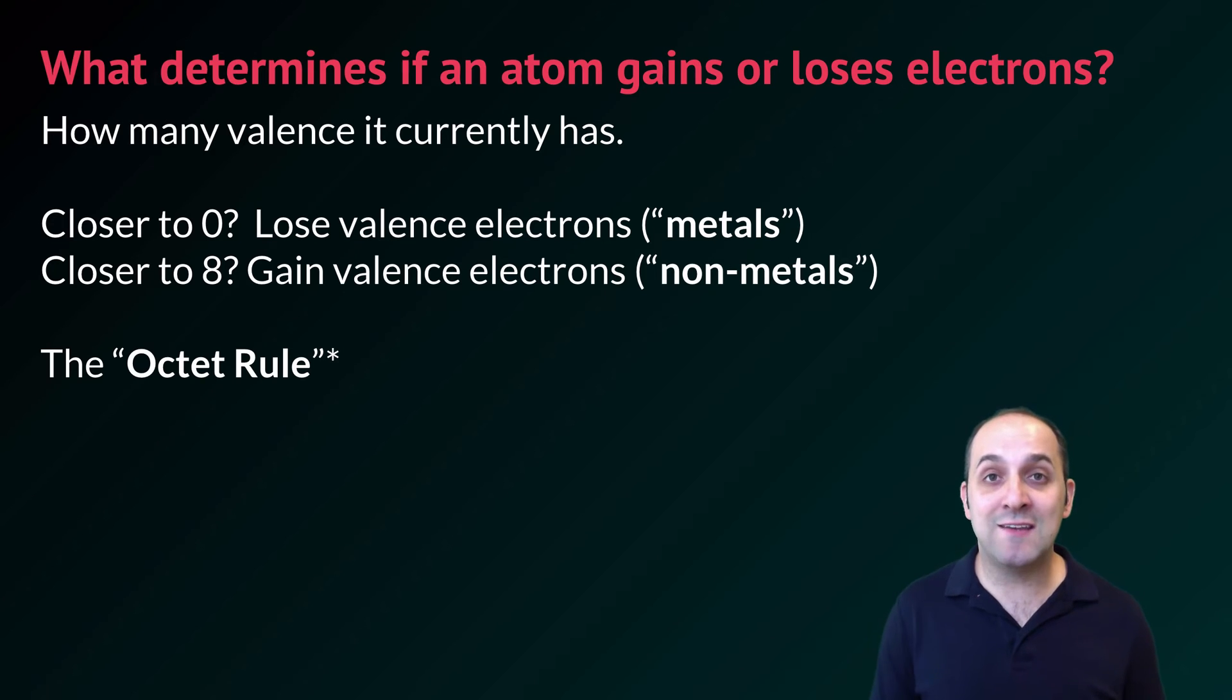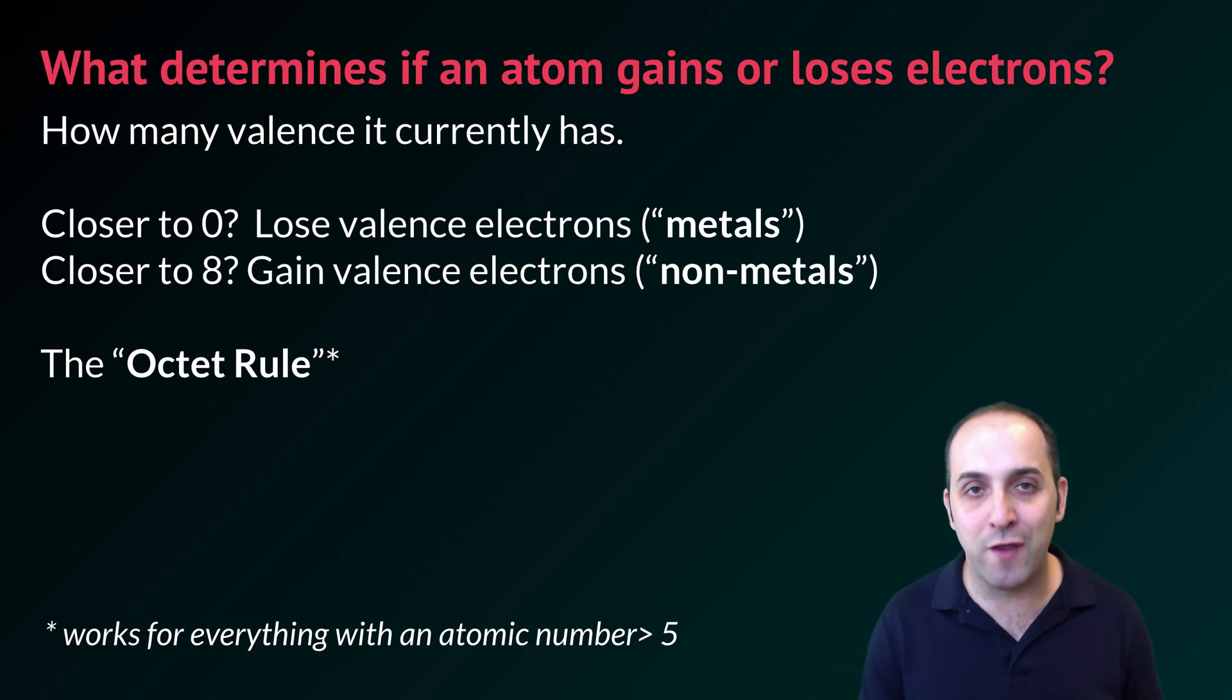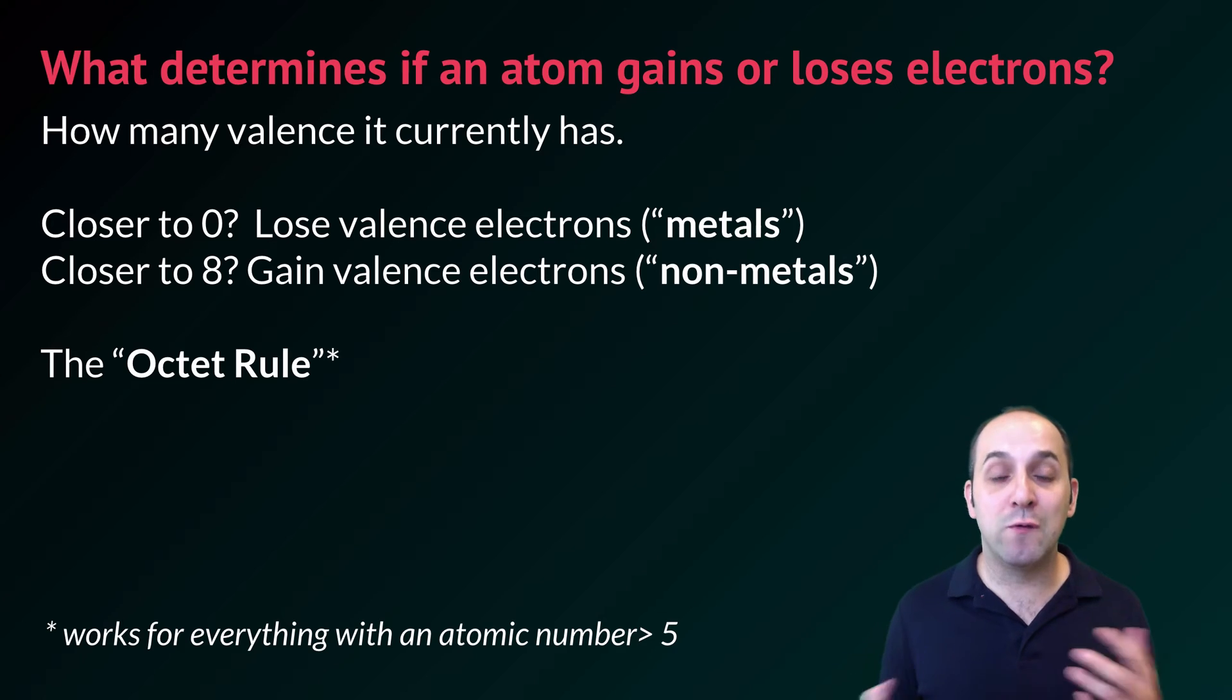This notion of trying to get to 8, either by losing your valence to go down to a valence that has 8, or by gaining the ones you need to fill up your 8, is known as the octet rule, and it holds true for every element with an atomic number greater than 5. Below 5, you're dealing with that first principal energy level, and so you just want to add or lose electrons to get to that filled first principal energy level, which has two valence electrons in it.